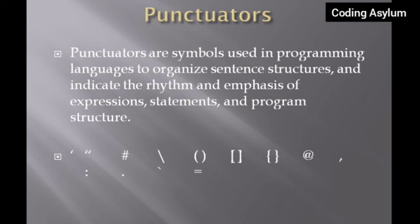Now let's look at punctuators. Punctuators are symbols used in programming languages to organize sentence structures and indicate the rhythm and emphasis of expressions, statements, and program structure. Just like in the English language, punctuators in programming are special characters that have reserved meanings — similar to keywords, but they are characters rather than words. For example, the hashtag symbol is used in Python to write comments, which do not affect program execution but help with readability.